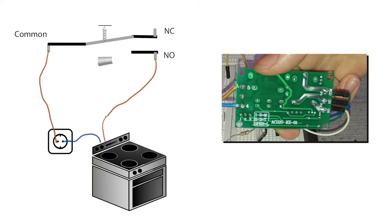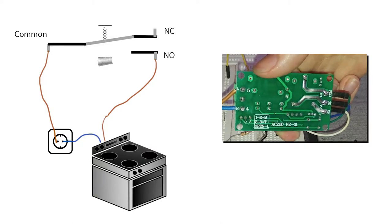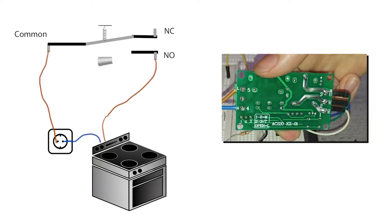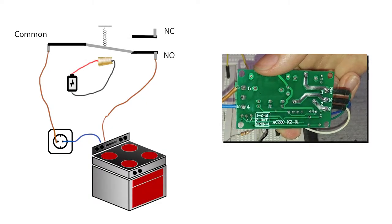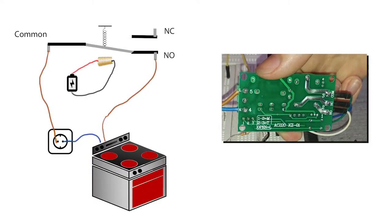Before going any further let me explain as quick and simple as possible how the relay on this module works. There are three contacts: the common, NC or normal closed and NO or normal open. Basically the common is the one that moves between the other two.